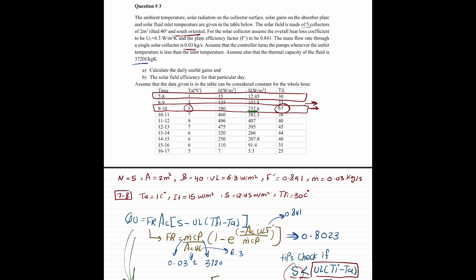For B, the solar field efficiency for that particular day, after finding each QU for each row, you'll have to add them up. Find the summation of QU.